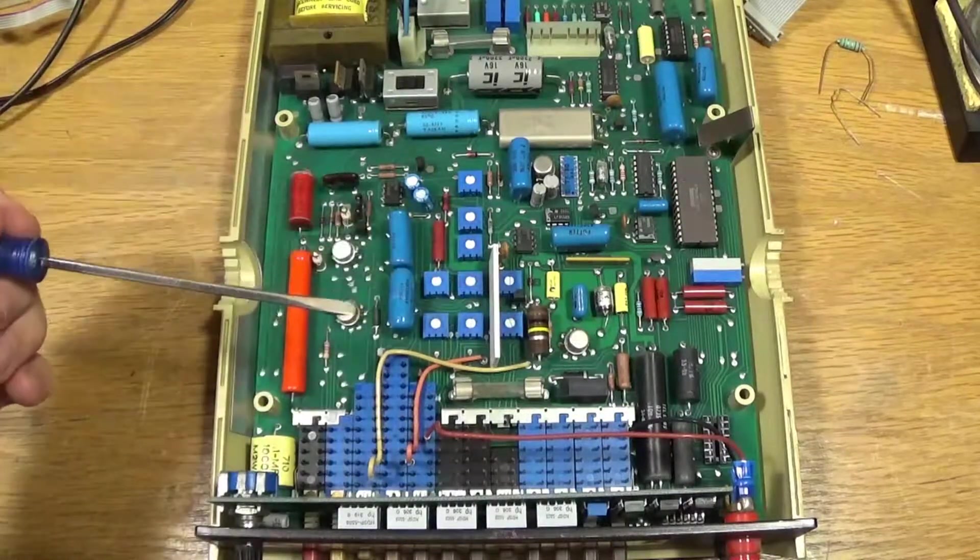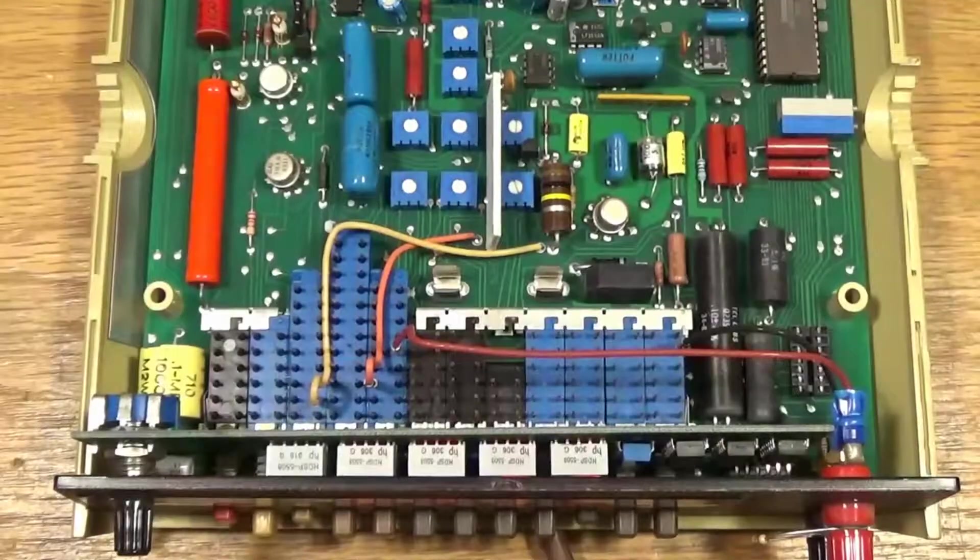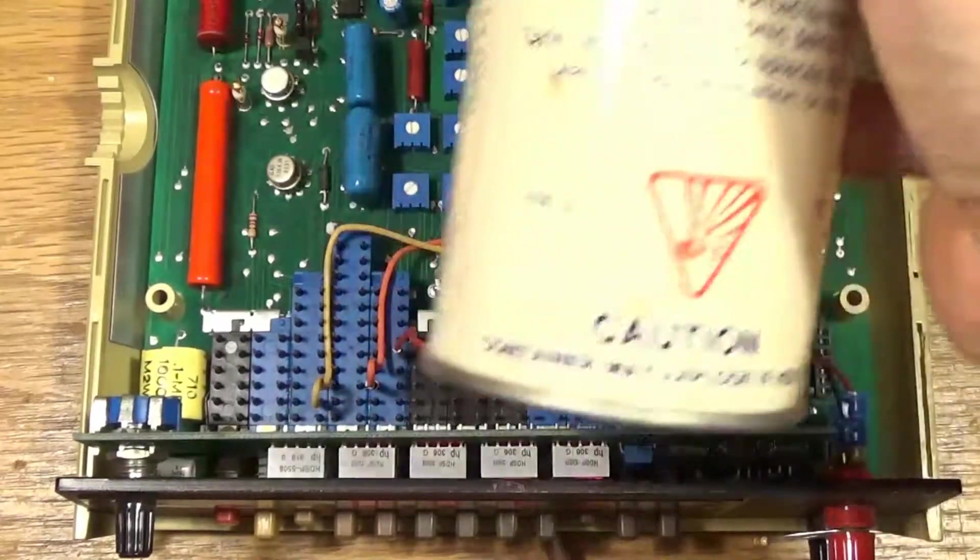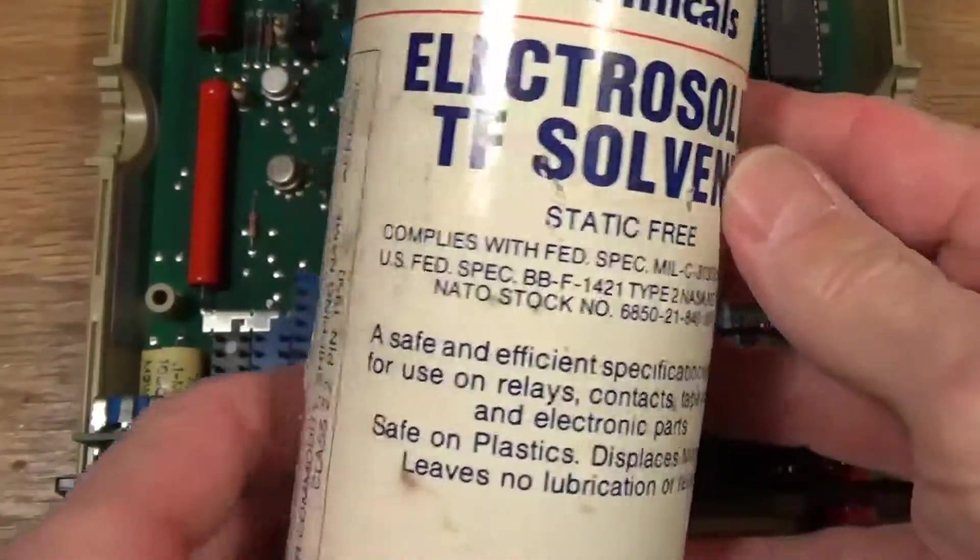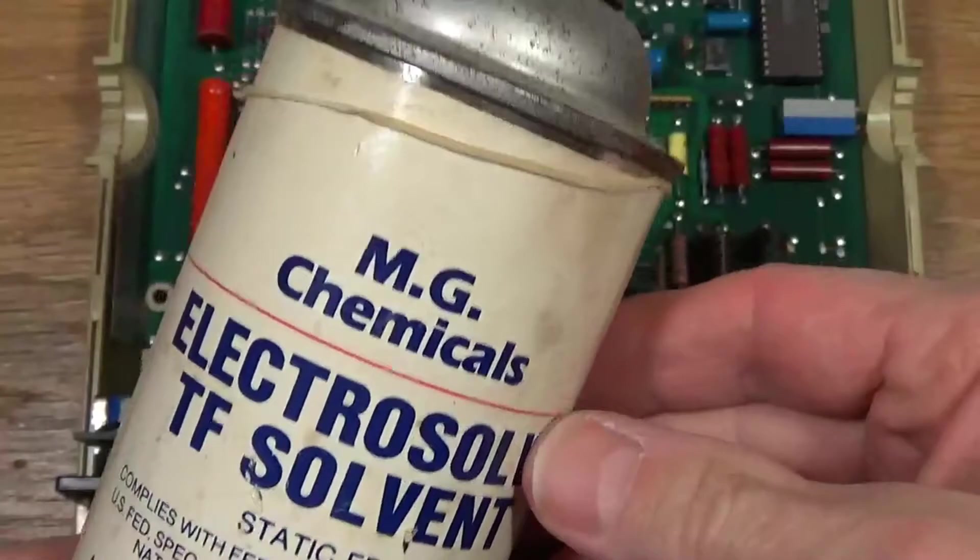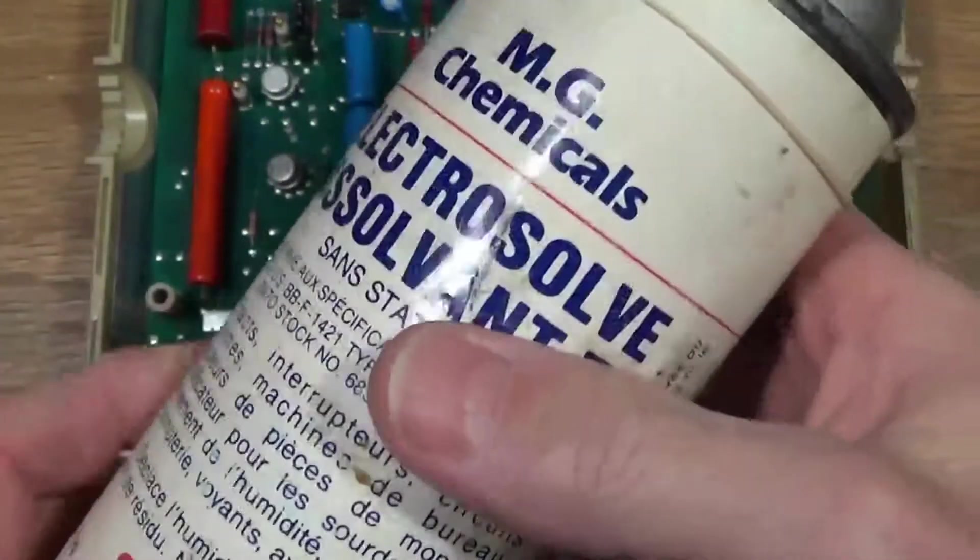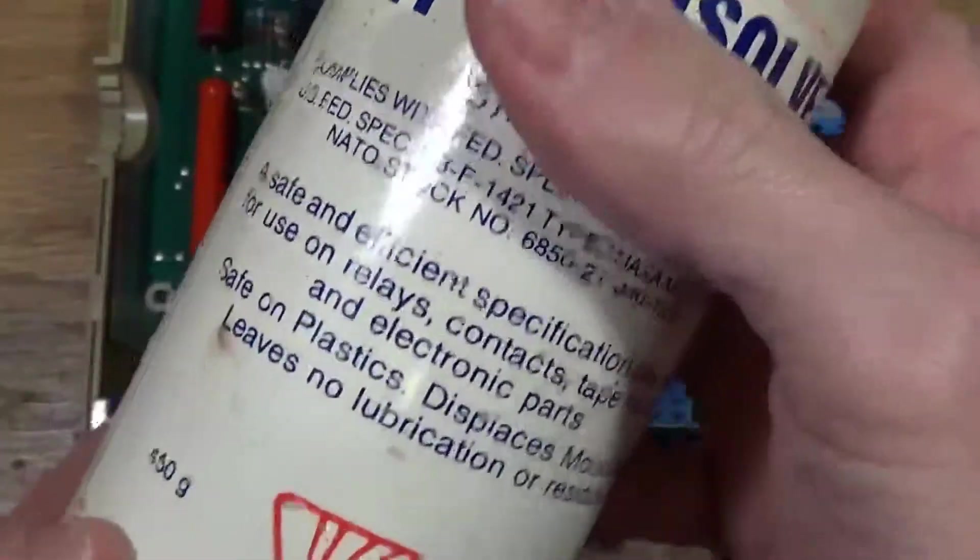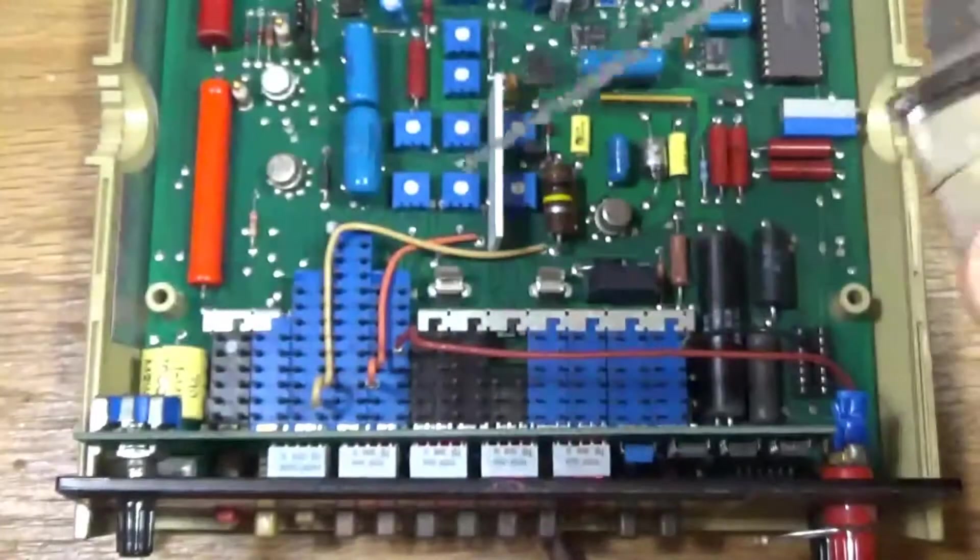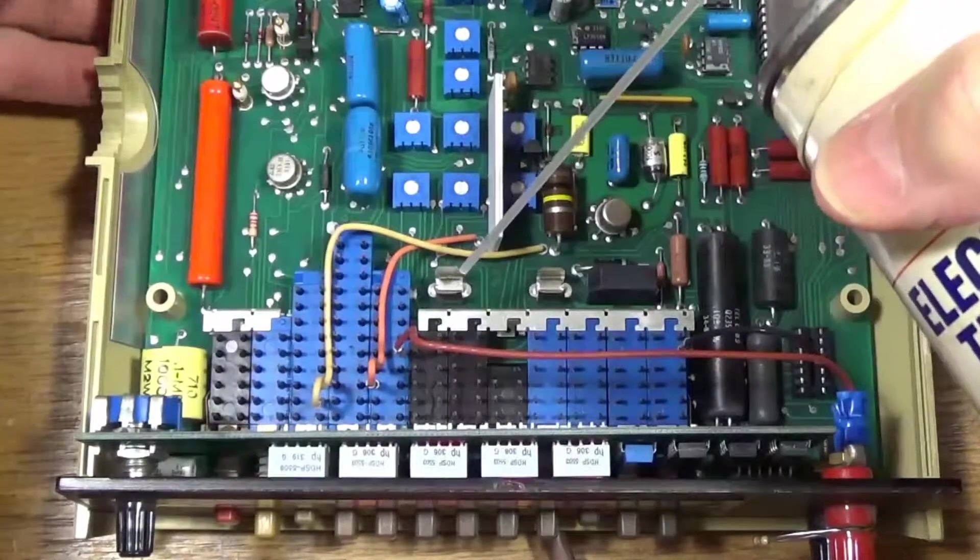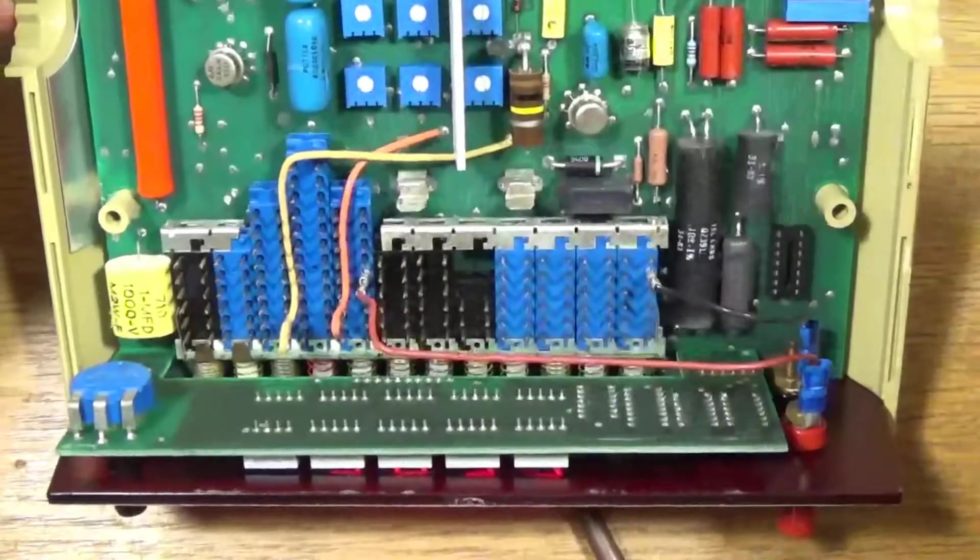So I just took some contact cleaner here. I've had this stuff for years, I can't remember when I bought this - I'm guessing almost 30 years ago. It still works. You just simply spray it down into the contacts here, down into the open end there, and just activate the switches.